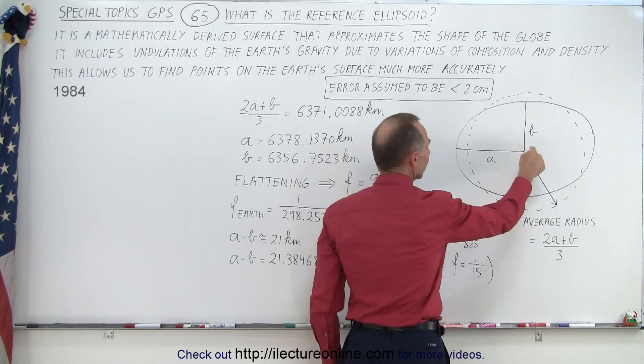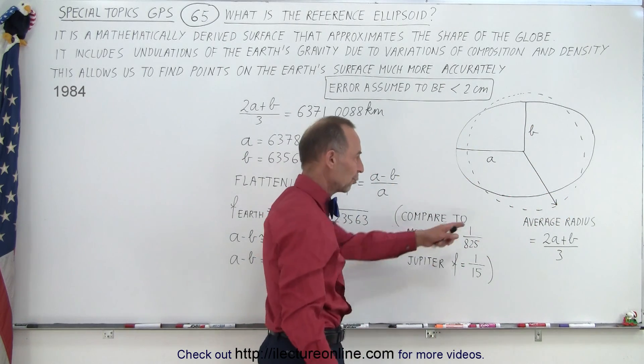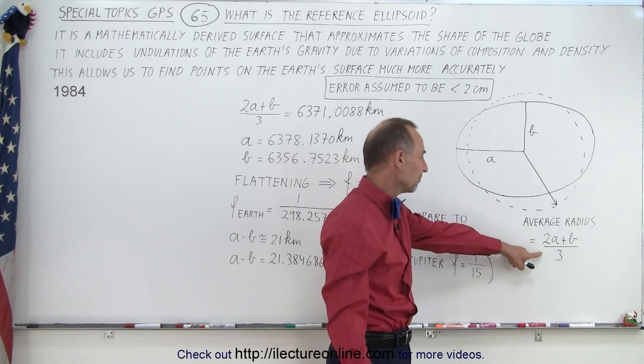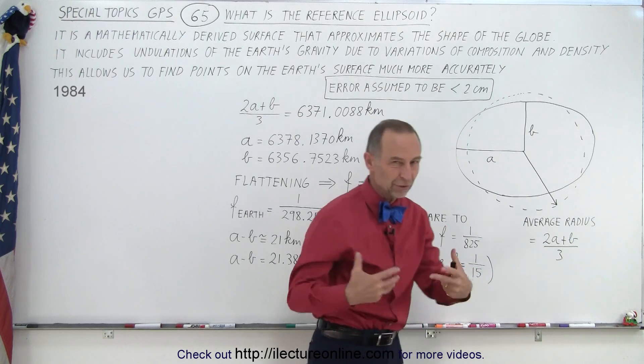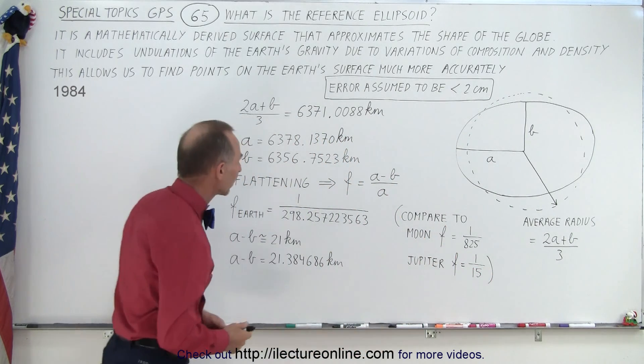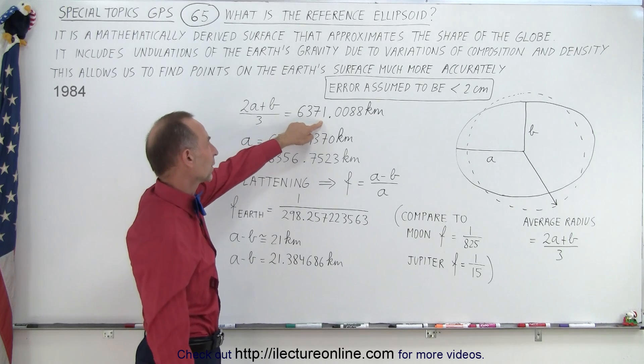We have the semi-major axis, the semi-minor axis, and then the average radius of the Earth. The average radius can be found by taking twice the semi-major axis plus the semi-minor axis divided by 3, which comes from the ellipsoid equation. And so that ends up being about 6,371 kilometers.